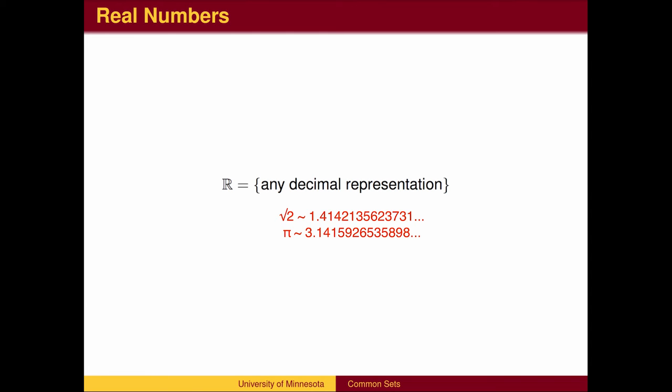But there are other numbers whose decimals don't repeat, like the square root of 2 and pi. We call this larger set the real numbers. The real numbers are denoted by the letter R.